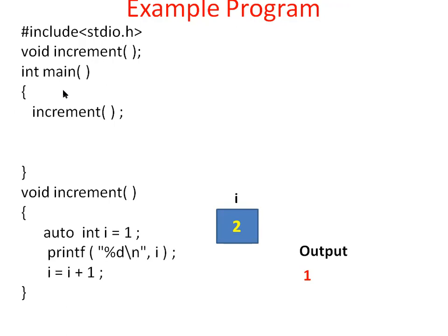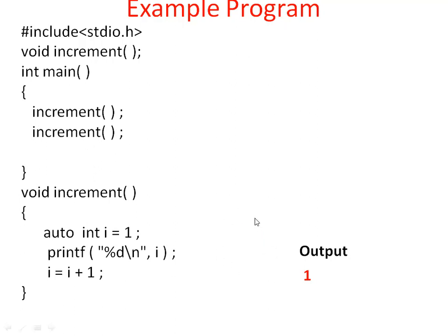Here main is the calling function and increment is the called function. So control goes back to the calling function. When the end of this function is reached and control leaves this function, since i is an automatic variable, immediately the memory for i will be released — that means i is removed from the memory. Once the control goes back to main, the variable is removed from the memory.